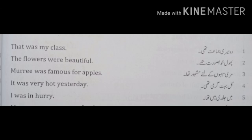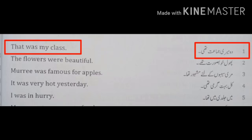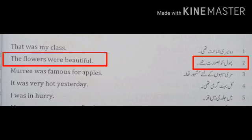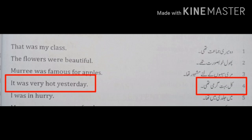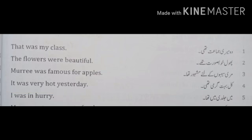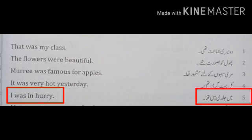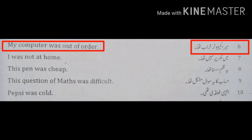Let's read the sentences of past simple tense. Number 1: Wo meri jamaat thi. — That was my class. Number 2: Phool khoobsoorat the. — The flowers were beautiful. Number 3: Murree was famous for apples. Number 4: Kal bahut garmi thi. — It was very hot yesterday. Number 5: Main jaldi mein tha. — I was in a hurry. Number 6: Mera computer kharab tha. — My computer was out of order.